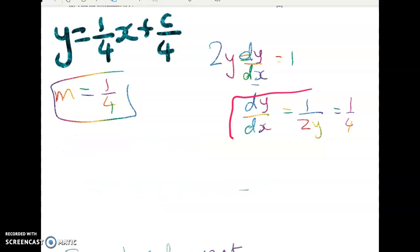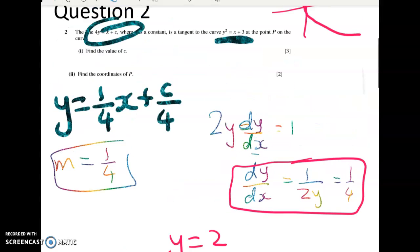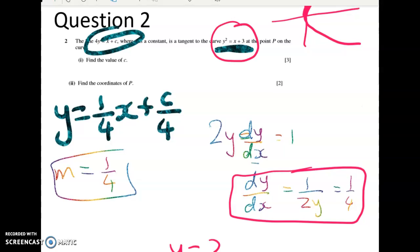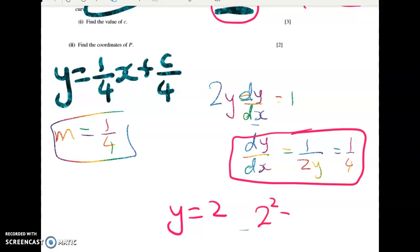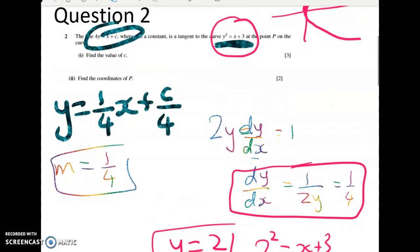So what have I got? Well I've got dy by dx is equal to 1 over 2y, so y must equal 2. And when y equals 2, we can substitute that back into this curve as we did before. So 2 squared equals x plus 3, so x is equal to 1. So A-level people, if you're watching, you can see how quickly we can get the coordinates of p first, but we then have to go back and just find the value of c.